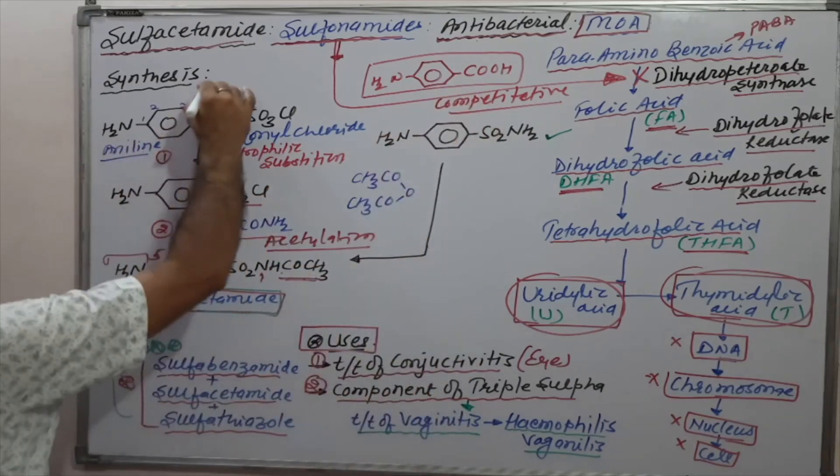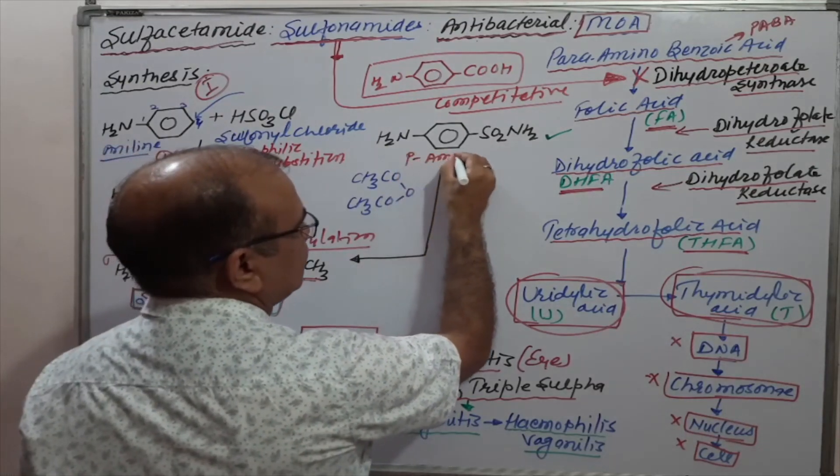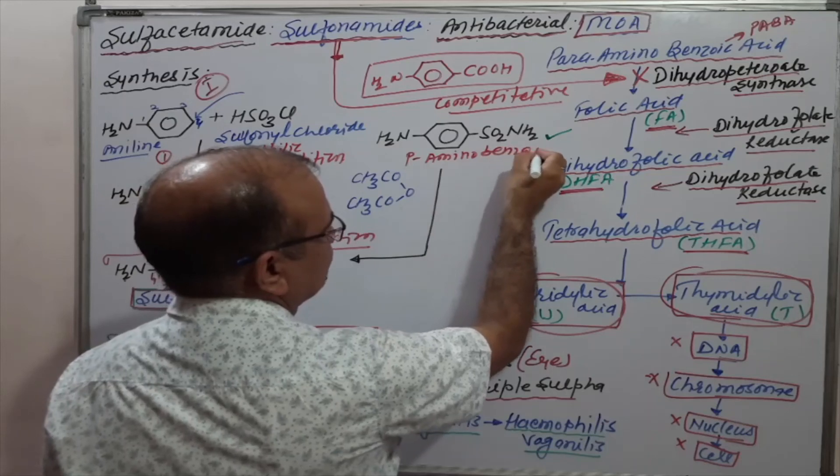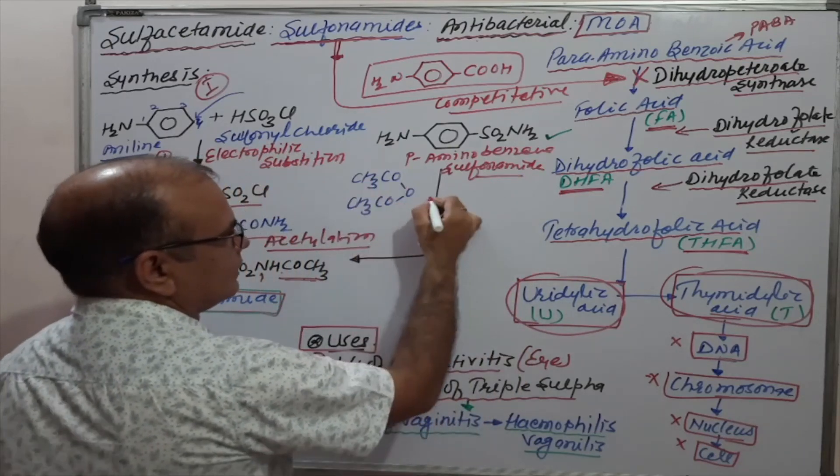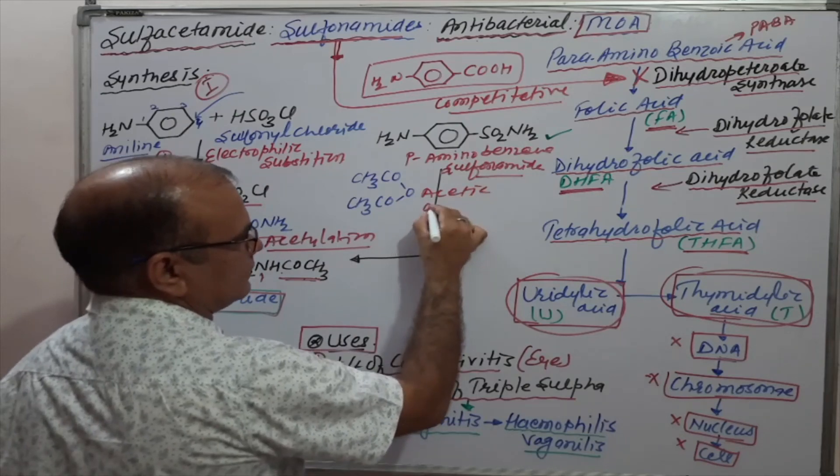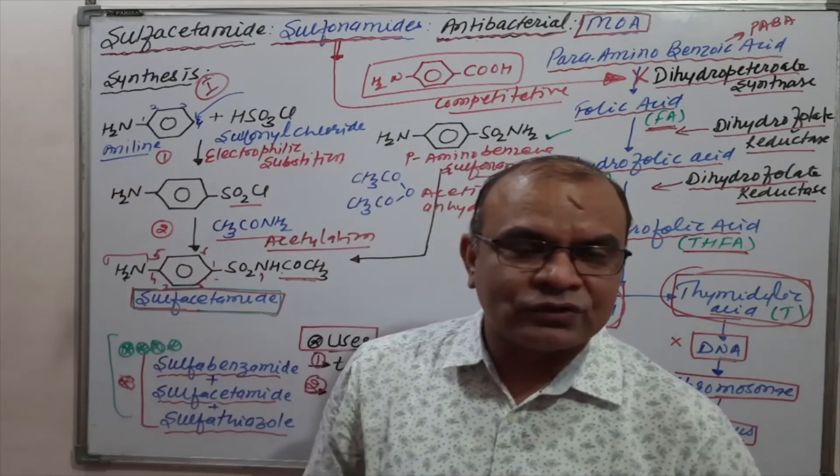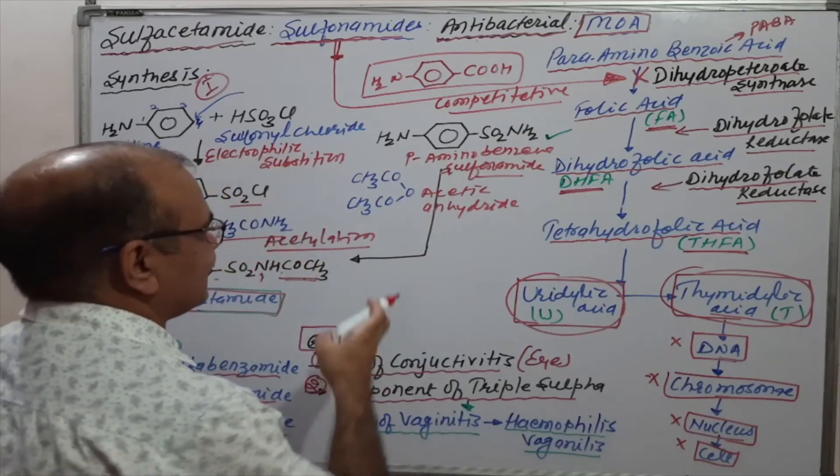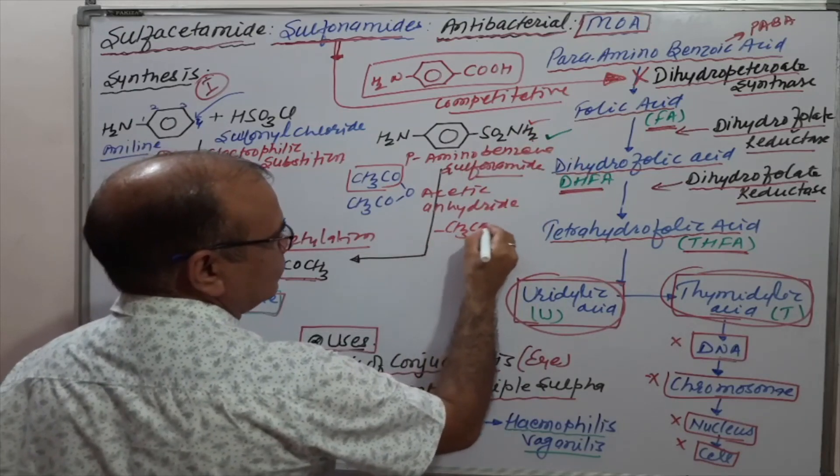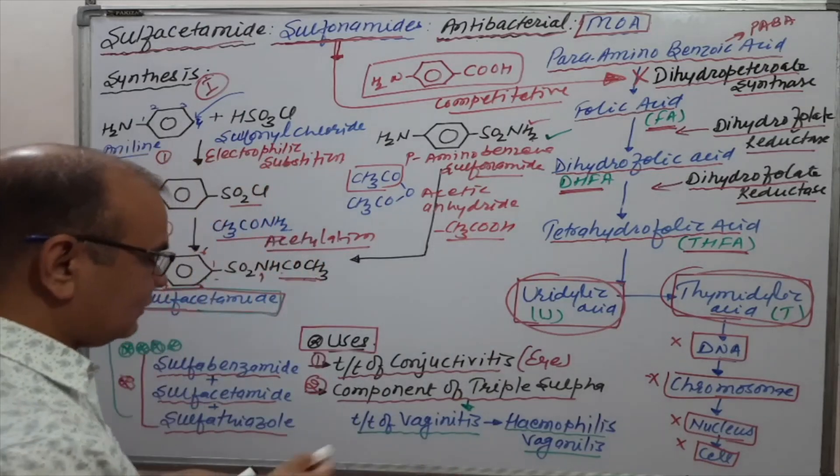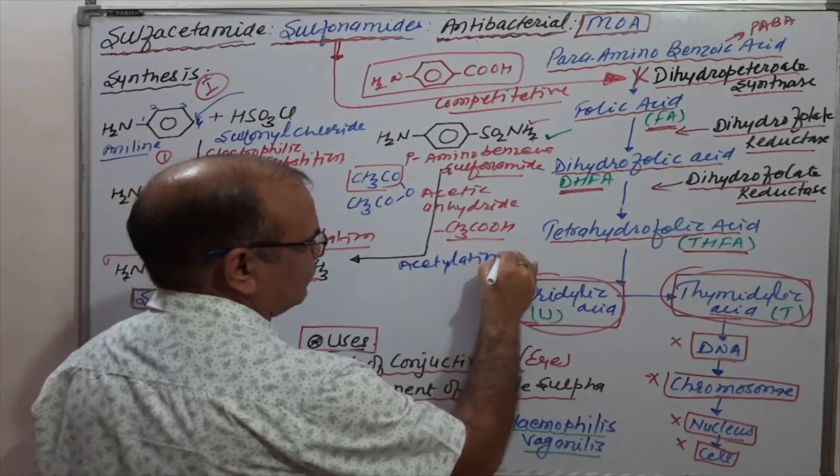What is another pathway? This is the first pathway. Another pathway uses para-aminobenzene sulfonamide. Simply, it is going to be acetylation. What is this? This is acetic anhydride used for acetylation purpose. CH3CO will be here and by taking one H, it will be removed as acetic acid. This step is known as acetylation.